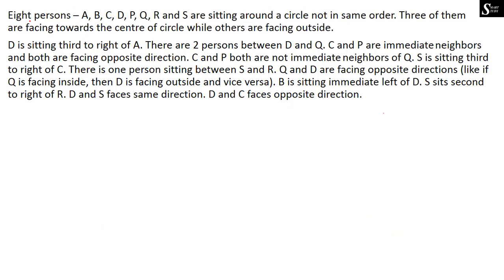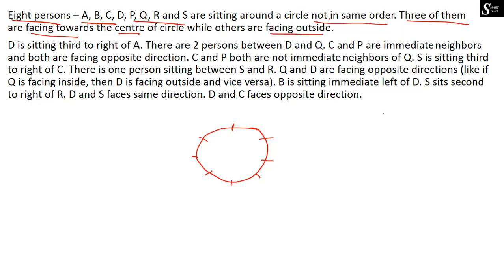As you can see, the question here is: 8 persons A, B, C, D, P, Q, R and S are sitting around the circle, not in the same order. There are 8 persons sitting around the circle. The next information is: 3 of them are facing towards the center of the circle while others are facing outside. So we need to find out which of these 8 persons are sitting where, and which 3 persons are facing center and who are facing outside.